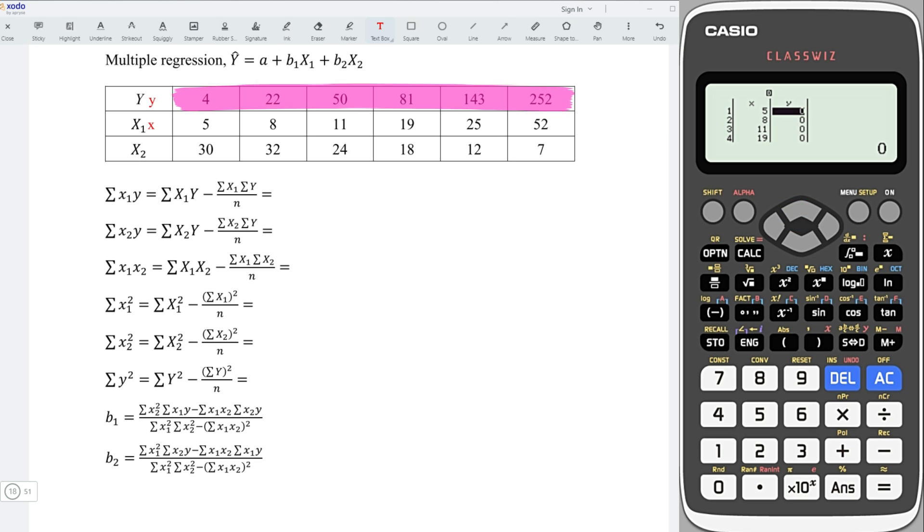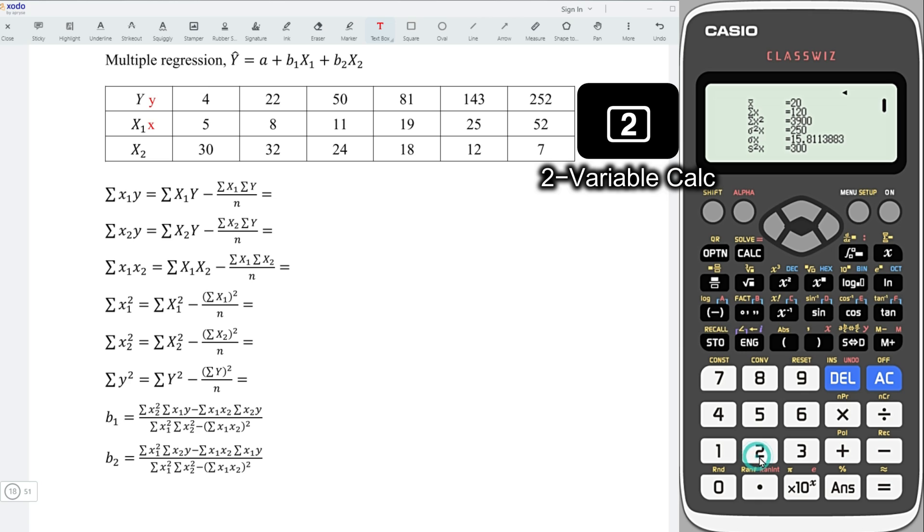Enter all the values: 4, 22, 50, 81, 143, and 252. Press on AC option, choose 2 for two variable calculation.